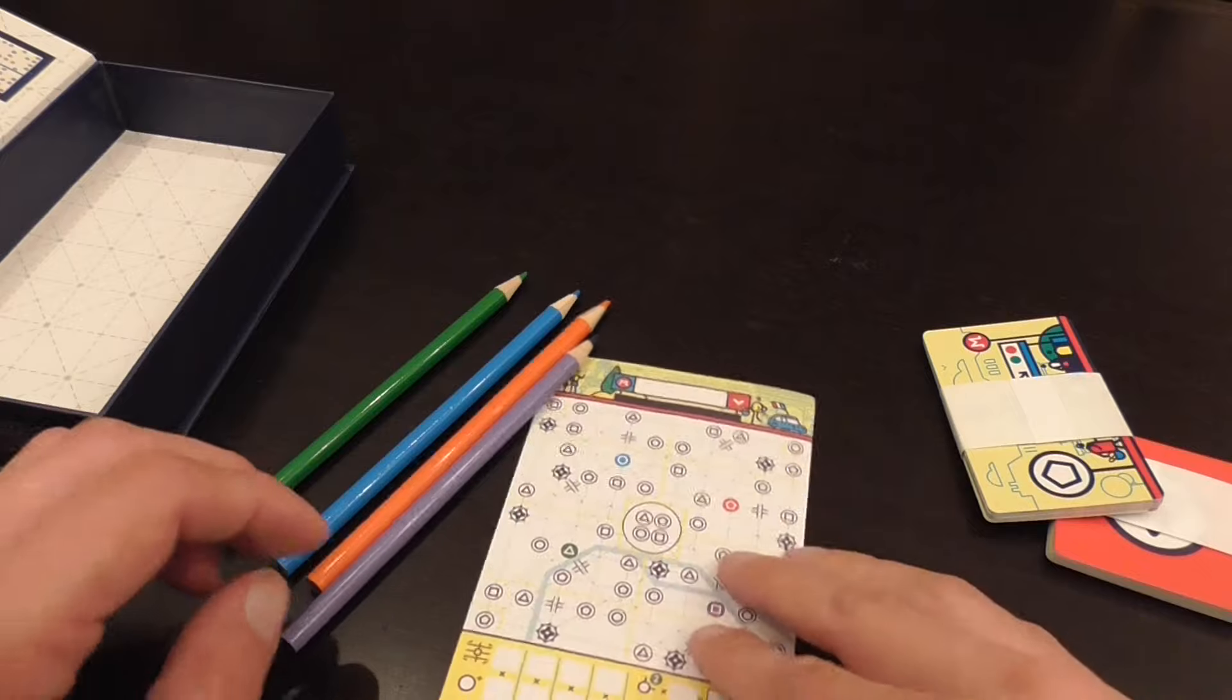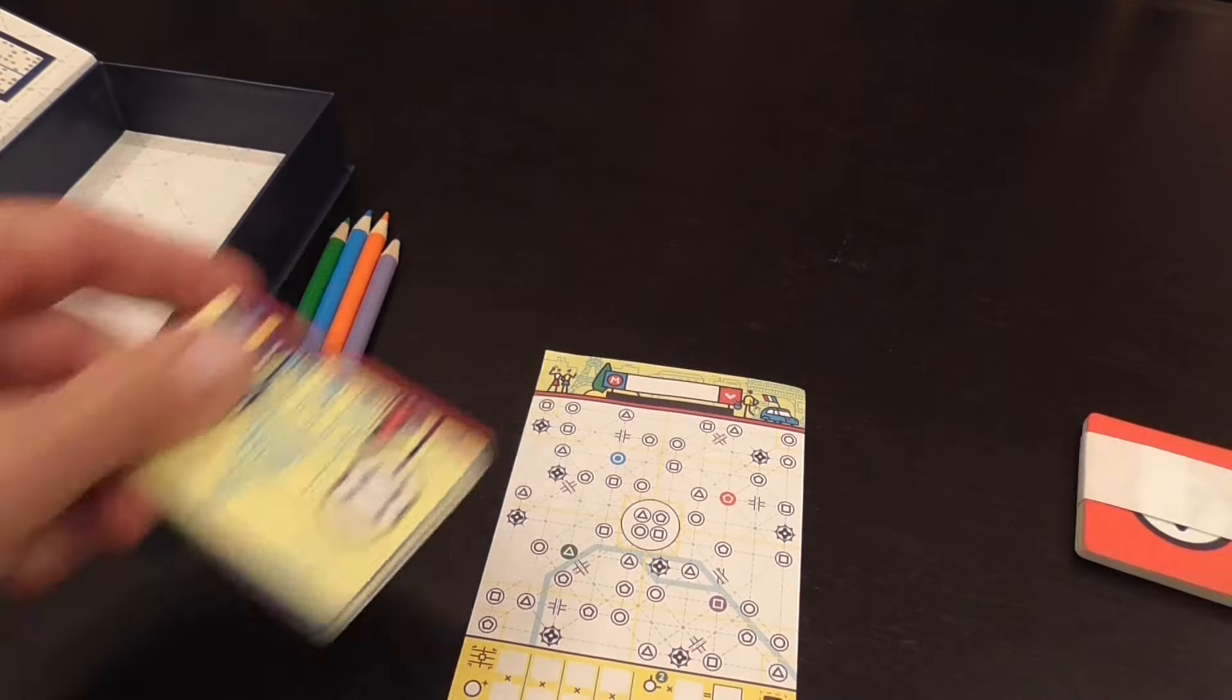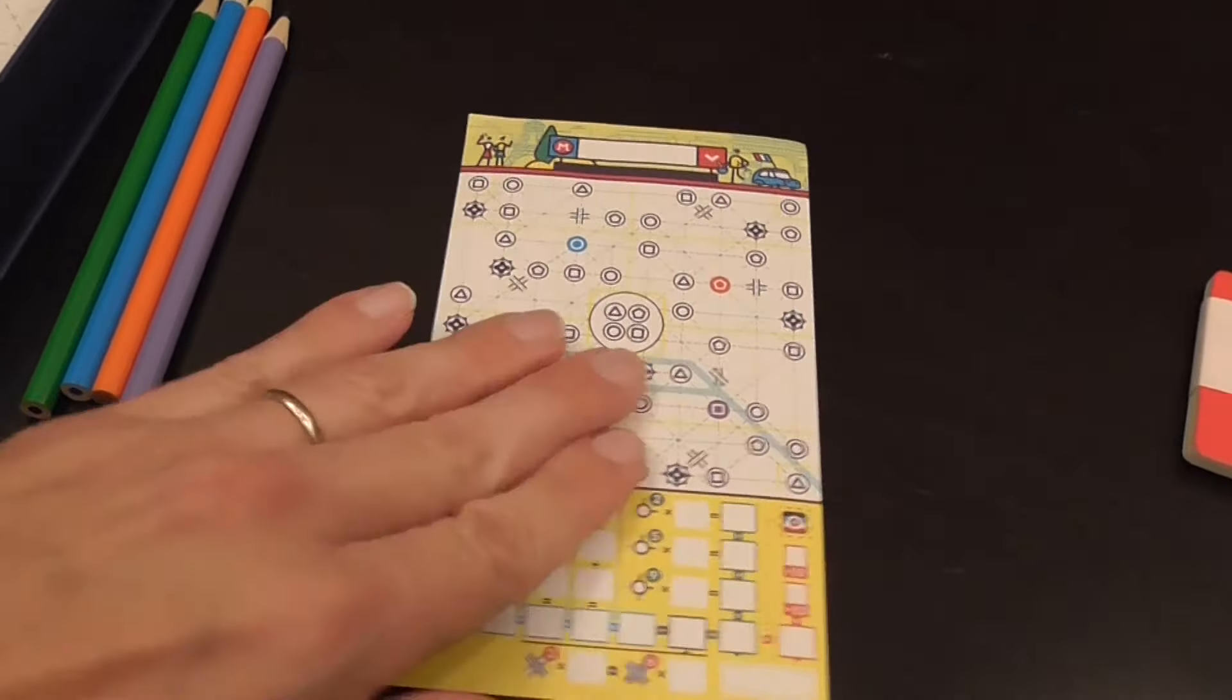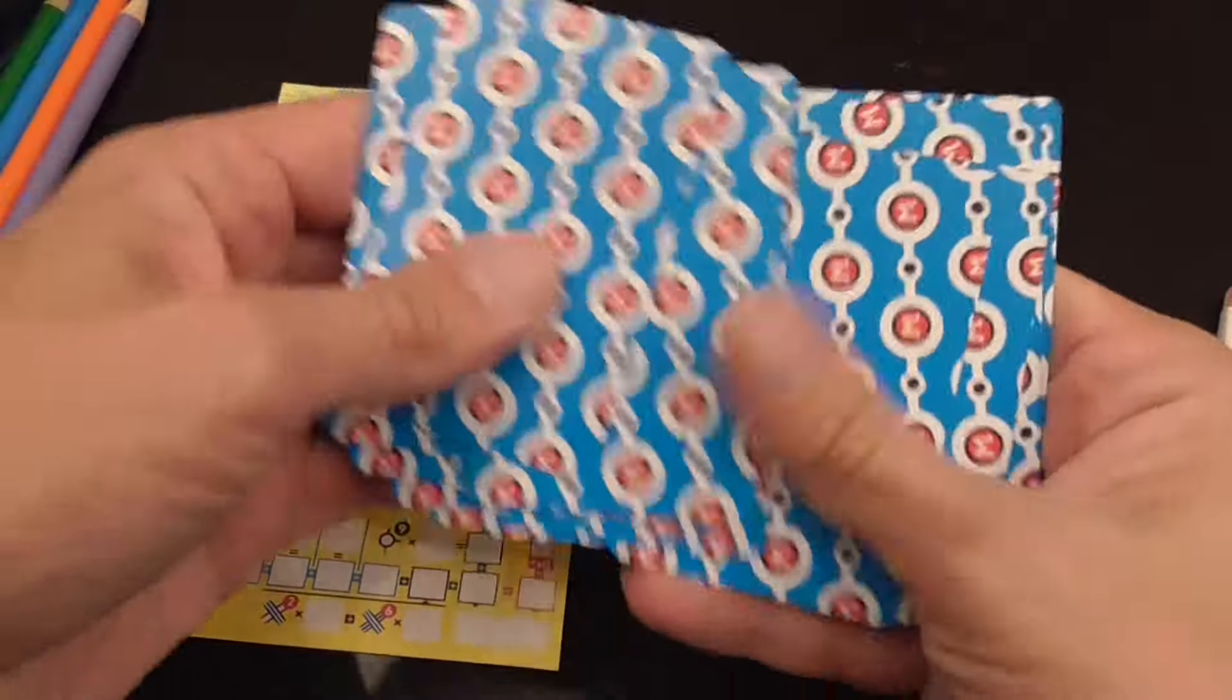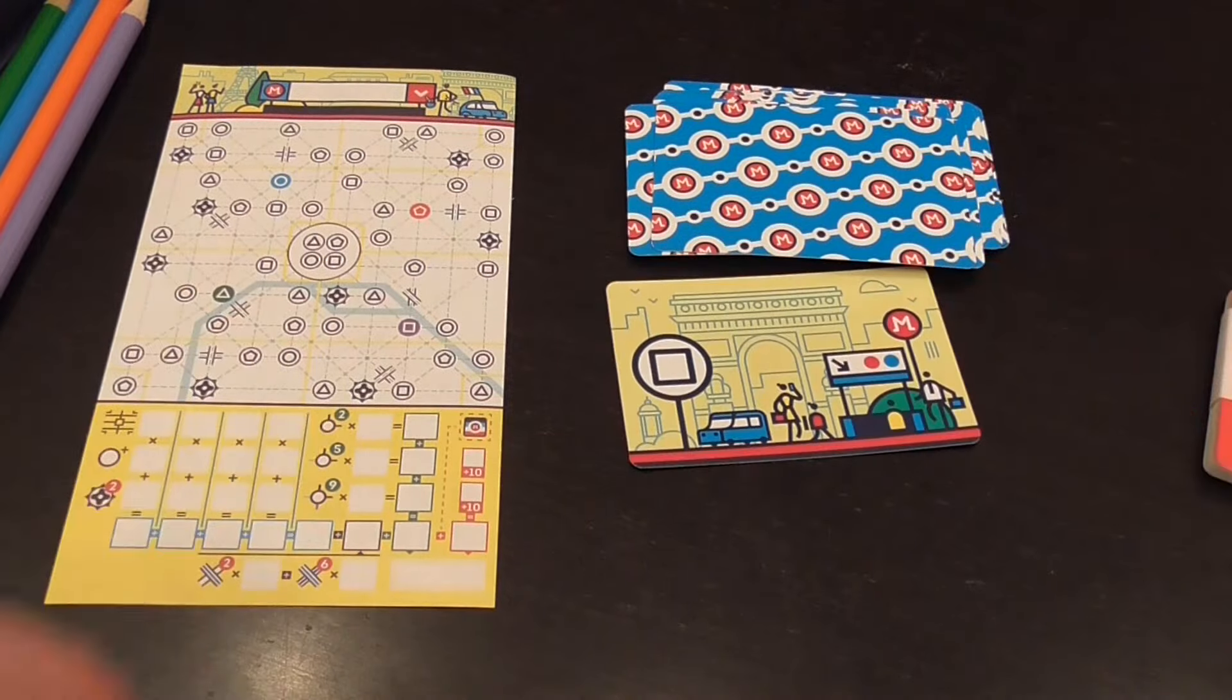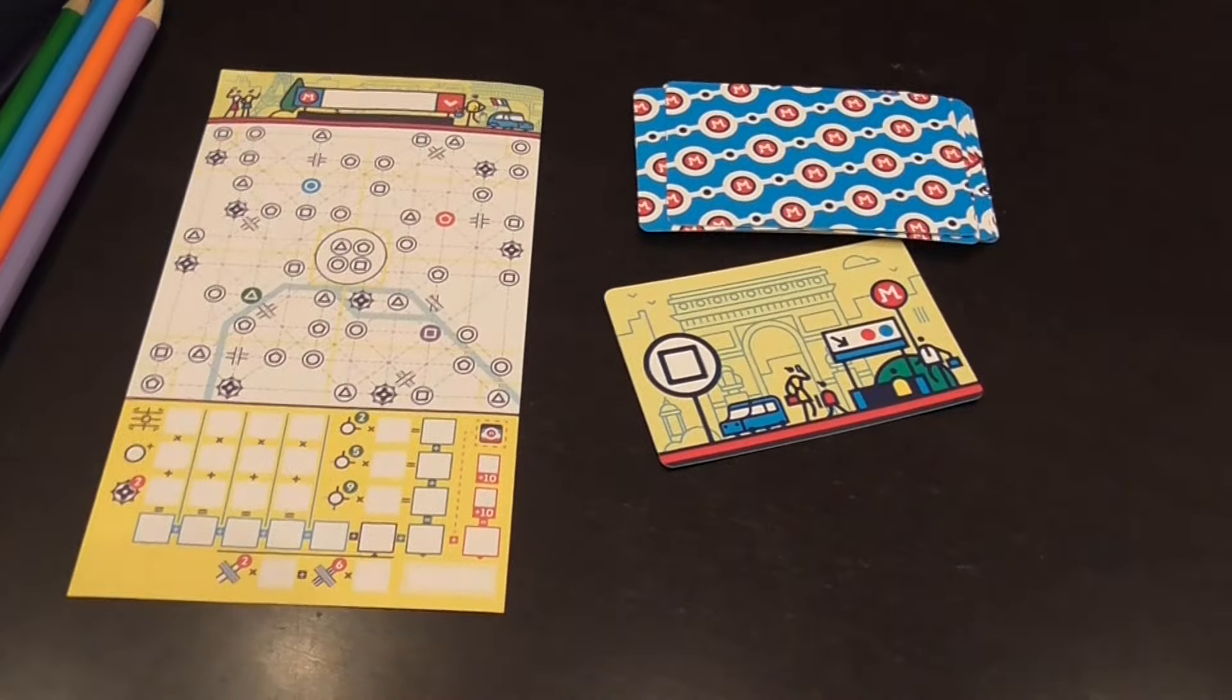Each player will need one every time that you play, but they're double-sided so they should last you for a little bit. The game is in essence multiplayer solo, there's no direct interaction. Everybody will respond to a visual prompt. So actually it's not a roll and write, it's a flip and write.